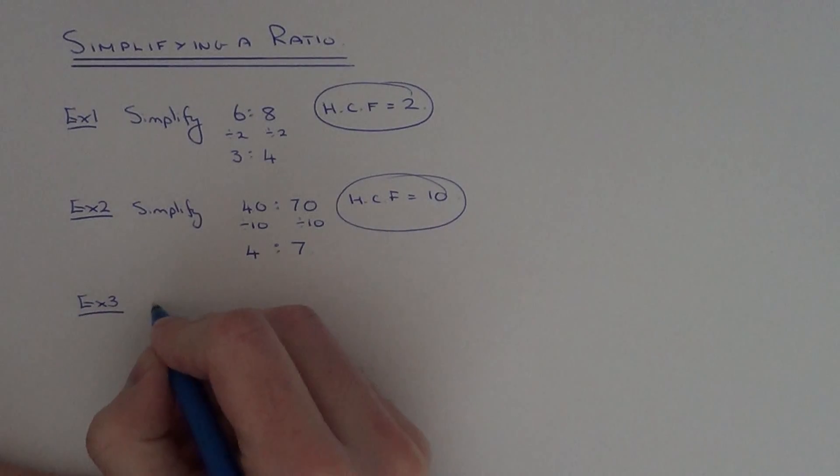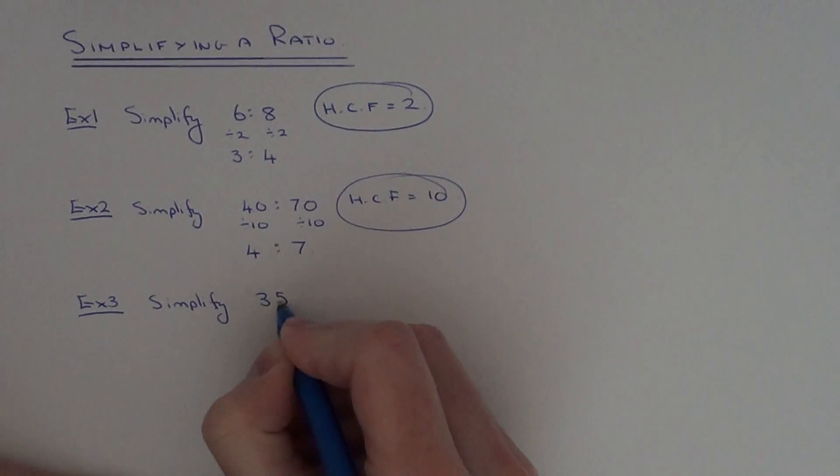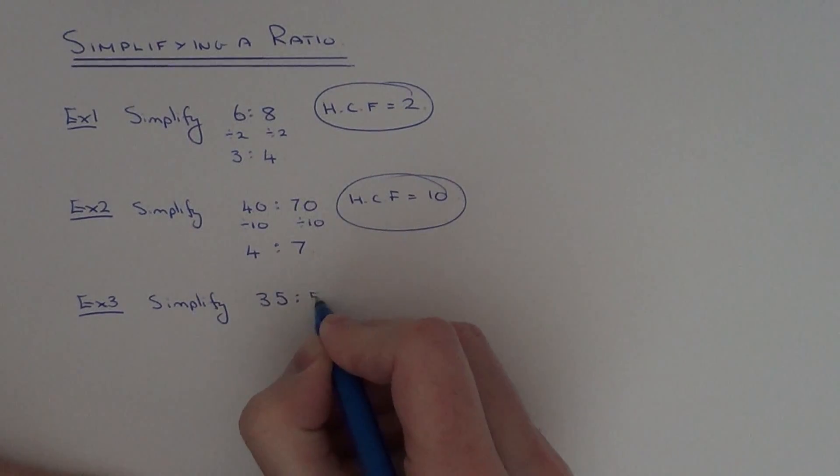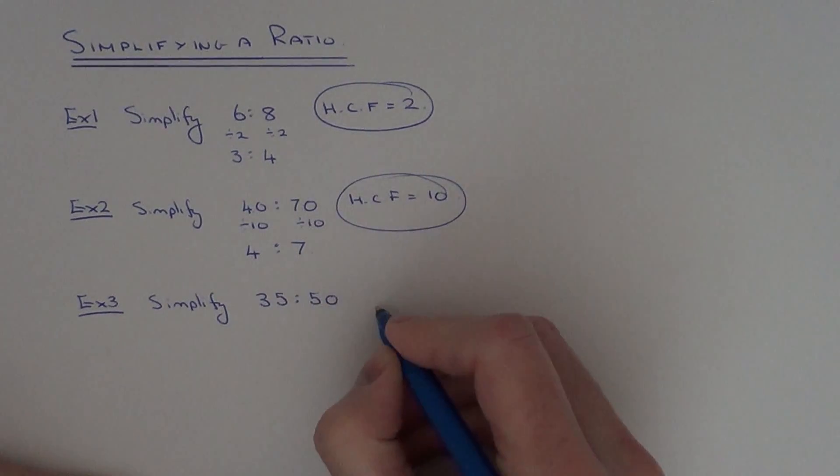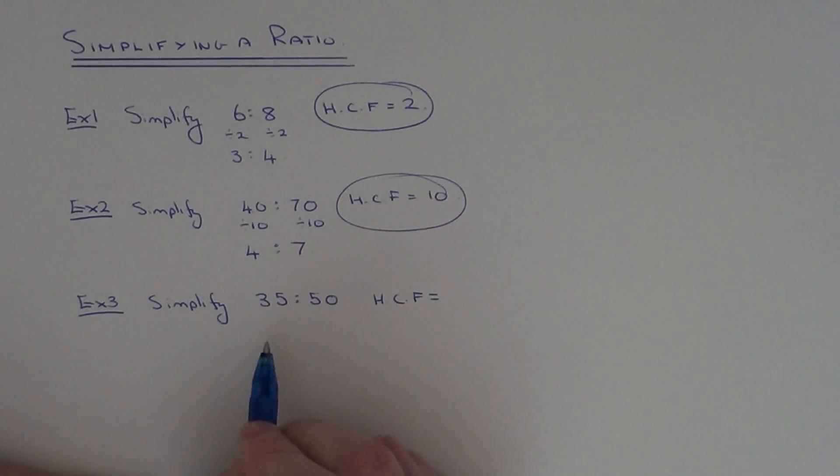So for example 3, we've got to simplify 35 to 50. Right, this time, again just look for your highest common factor. This time it's going to be 5. So 5 is the biggest number that goes into 35 and 5 is the biggest number that goes into 50.